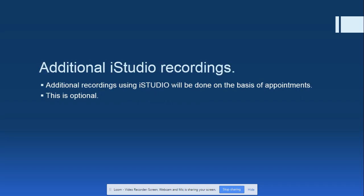iStudio recordings may be required if you have experimental content — for instance, if you want to upload a laboratory practical. In that case, a team from the Center for E-Learning will record your specific experiment and upload it to the YouTube account, following which you can embed the link into openlearning.com. Additional iStudio recordings are optional, because surveys of online lectures show that greater emphasis is placed on the audio link compared to a video link of a lecturer presenting slides.